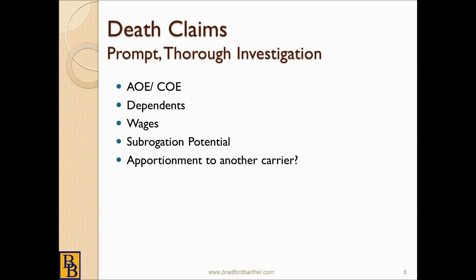When you're handling a death claim, or any claim for that matter, three things everybody wants to know: What's it going to cost? When's it going to close? And can you influence the cost? For death claims, prompt thorough investigation — as with any claim — you want to review AOE and COE, make sure it really is industrially related. You want all relevant dependent information, accurate wage information for the deceased employee, and to look for any subrogation potential.